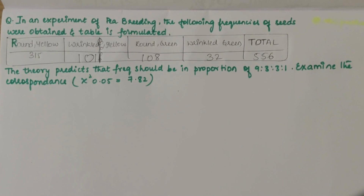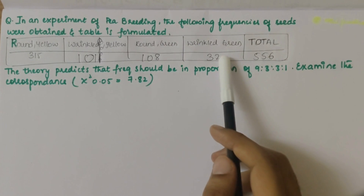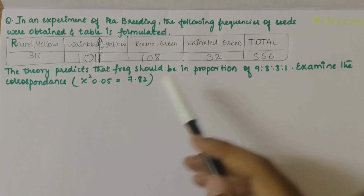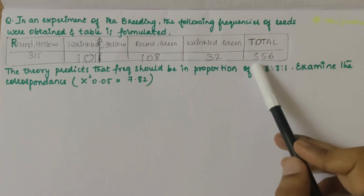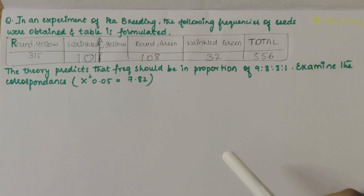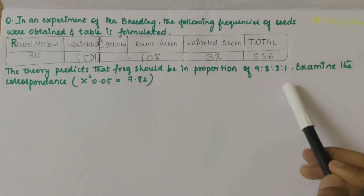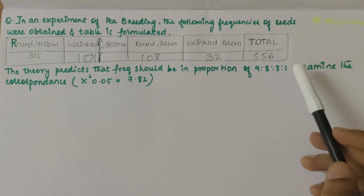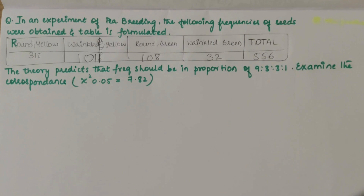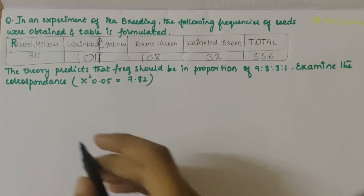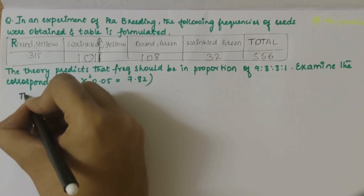In this video we'll be solving a question related to chi-square distribution. The problem statement is regarding pea breeding. The following frequencies of seats were obtained depending on the characteristics, and the total 556 results were there. The theory predicts that the frequency should be in proportion of 9:3:3:1. Now we have to examine the correspondence between the theoretical and experimental values. First let's write what theory says.